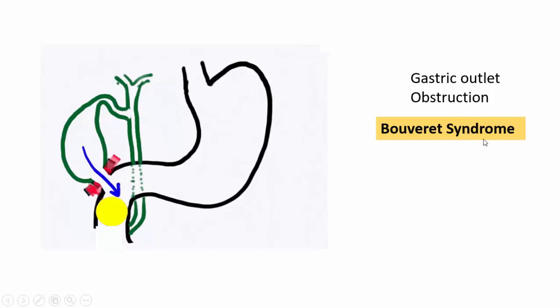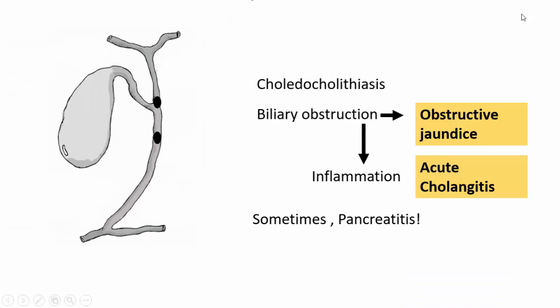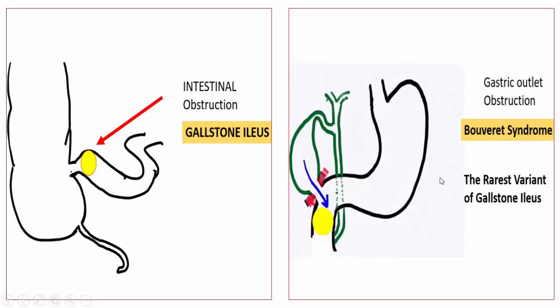If the gallstone exits into the duodenum but becomes stuck in the proximal duodenum itself, there will be gastric outlet obstruction. This clinical scenario is referred to as Bouveret syndrome — the rarest variant of gallstone ileus. In summary, complications of gallstones include acute cholecystitis, hydrops, mucocele, empyema, perforation, and carcinoma within the gallbladder; choledocholithiasis, obstructive jaundice, acute cholangitis, and pancreatitis in the biliary tree; and rarely gallstone ileus or Bouveret syndrome.